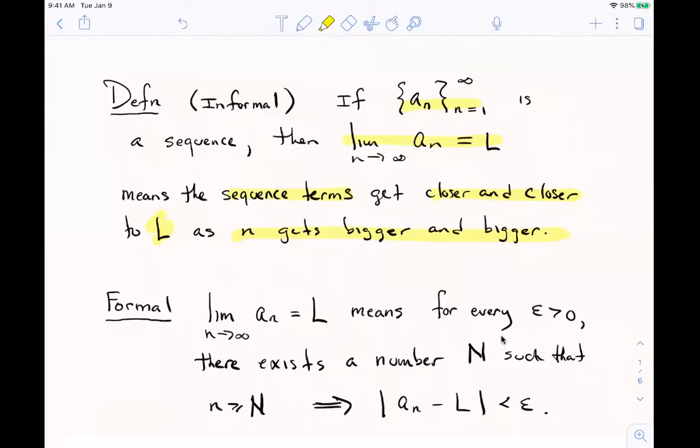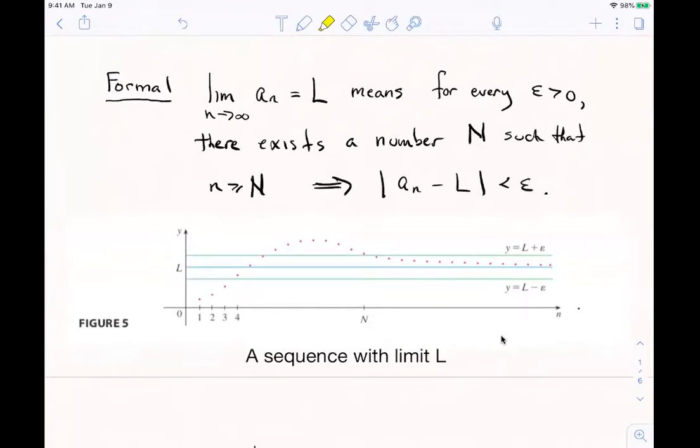All I need to do to make that rigorous is I just need to kind of say what I mean by these not so rigorous terms like closer and closer and bigger and bigger. Those aren't really mathematically rigorous terms. So the formal definition of limit means if you're saying some sequence has a limit L, then it means that for every number epsilon that you pick, think of it as some tolerance, the distance away from the limit. So for every positive epsilon, you can find a number n, so that if you go out past that number in the sequence, you look out the list past that number, your sequence terms will all stay within epsilon away from L. The absolute value of the difference between two numbers, just read this as the distance from a sub n to L. And that distance has to be less than epsilon.